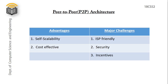P2P architecture has three major challenges. First is ISP friendliness — internet service providers provide more bandwidth for downstream rather than upstream, and peers need to distribute files through ISPs, applying more load on them. Second is security — since peers are open in nature, they are more prone to security breaches. Third is incentives — peers need to contribute bandwidth, processing, and storage to other peers.